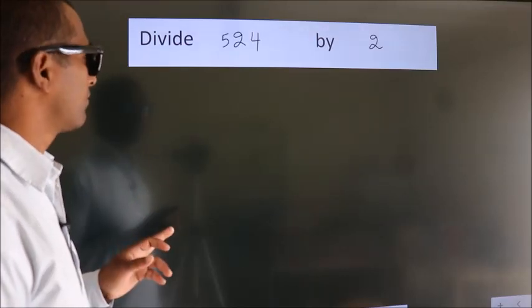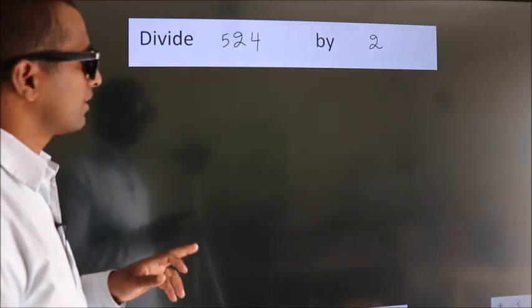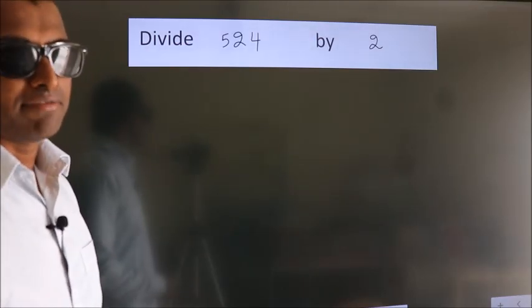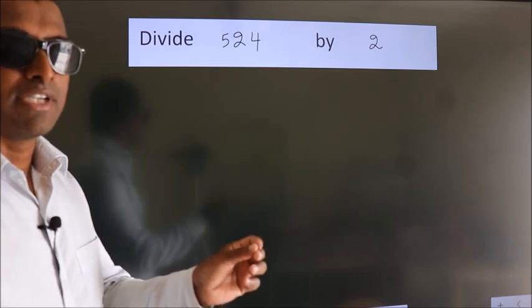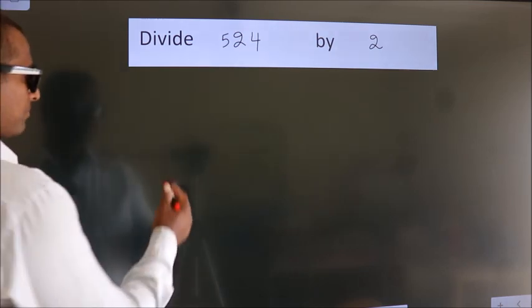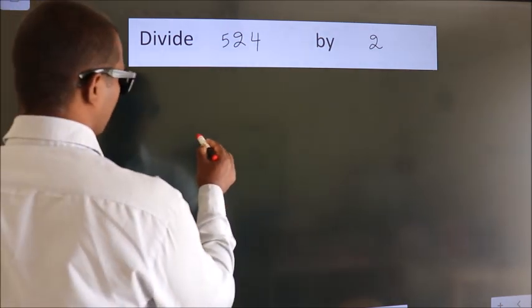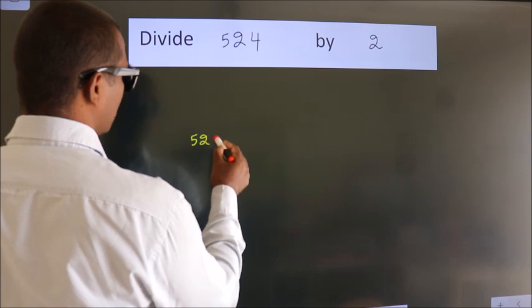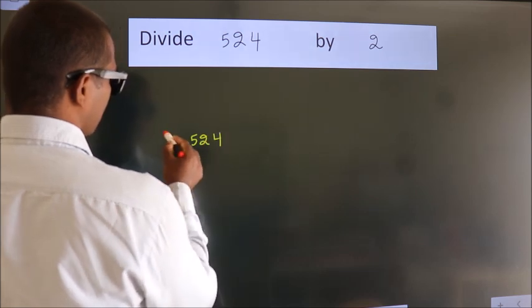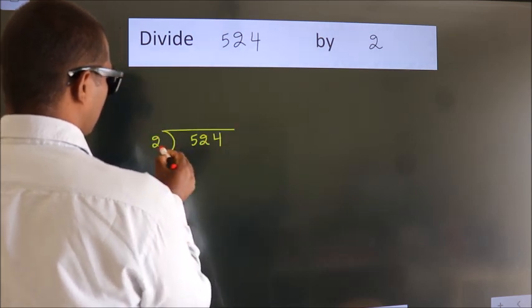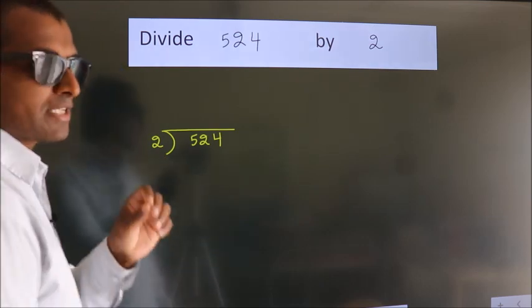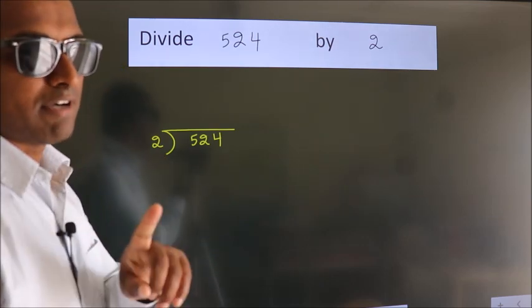Divide 524 by 2. To do this division, we should frame it in this way — 524 here, 2 here. This is your step 1.